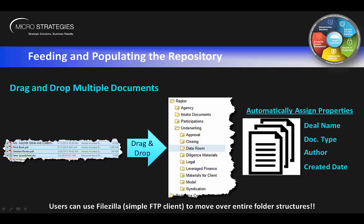You can also use FTP clients such as FileZilla. These FTP clients allow you to drag an entire folder structure into Alfresco. So if you've already built out your Data Room by unzipping a file and have that whole structure ready, you can pick that whole structure up, bring it into Alfresco, and it'll automatically build the exact same folder structure out in Alfresco, attaching the deal name and doc type.